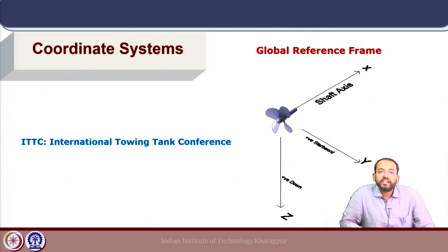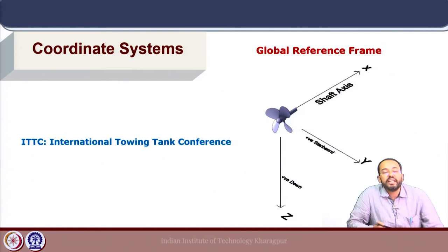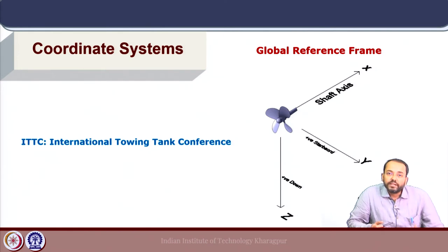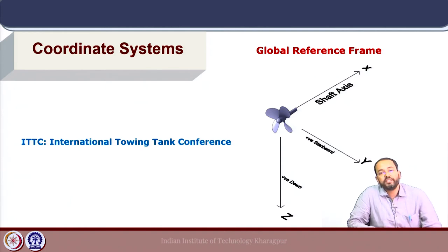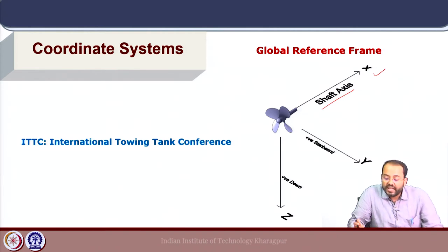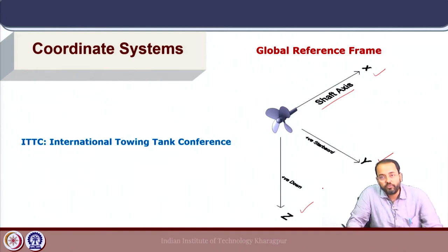The International Towing Tank Conference (ITTC) is an association of organizations dealing with ship hydrodynamic testing. They have defined a global reference frame for the ship-propeller system, which is heavily used for experimental testing of model ships and propellers and for numerical analysis of ship hydrodynamic problems. The shaft axis of the propeller is defined as the X axis; the Y axis is defined as positive starboard and the Z axis as positive down — the standard norm in naval architecture.